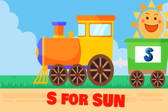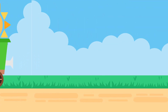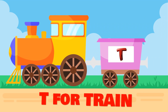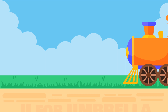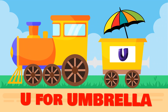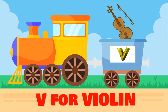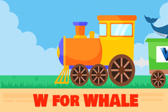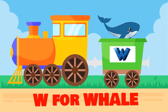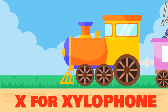S for sun. T for train. U for umbrella. V for violin. W for whale. X for xylophone.